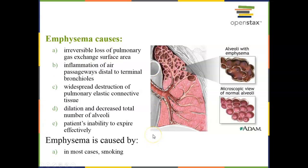Emphysema is a serious disorder — it's a form of COPD, as is chronic bronchitis. It's associated with changes to both lung structure and alveolar structure. Lung tissue itself has elastic connective tissue, and as we age the elasticity of our lungs decreases. When we take a deep breath in, the lungs expand, but without sufficient elasticity they don't recoil back properly, which makes it harder to breathe.